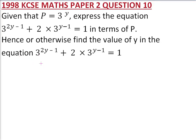1998, Paper 2, Question 10. We are told: given that P equals 3 to the power Y, express the equation 3 to the power 2Y minus 1 plus 2 times 3 to the power Y minus 1 equals 1 in terms of P. Hence, or otherwise, find the value of Y in the equation.